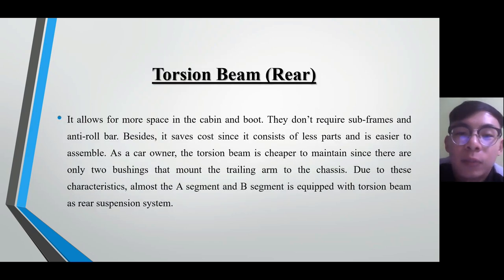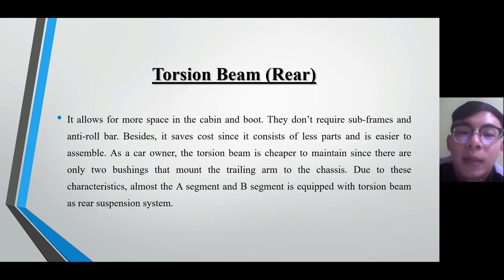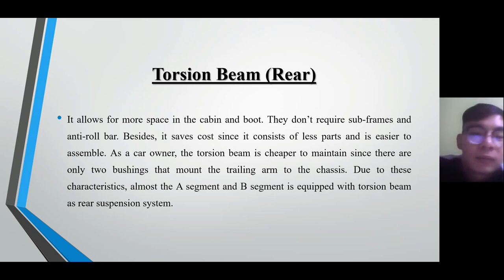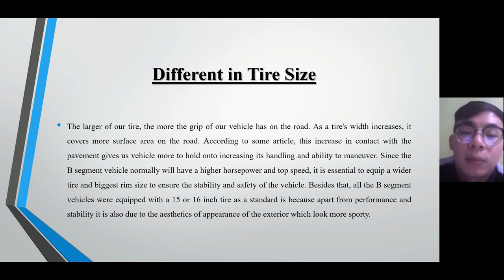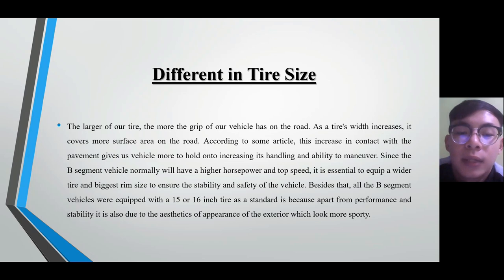For the rear suspension system, they use the torsion beam because it allows for more space in the cabin and boot. It also saves cost since it consists of fewer parts and is easier to assemble. For tire sizes, they mostly use 15-inch rims for the standard variant and 16-inch for the mid-spec, because apart from performance and stability, it is also due to the aesthetics and exterior appearance, which looks more sporty.